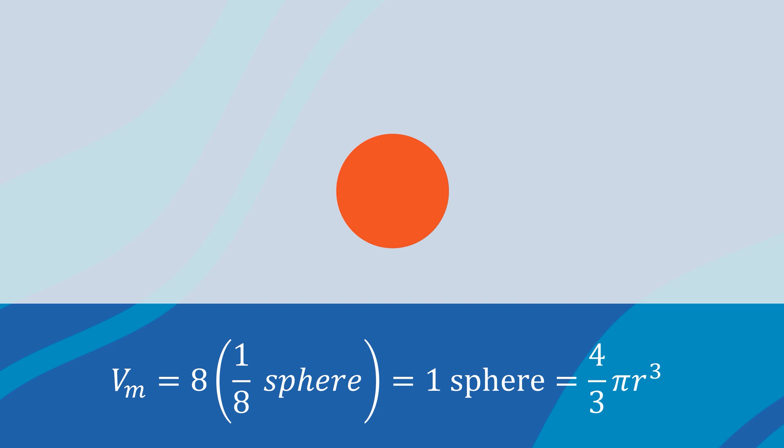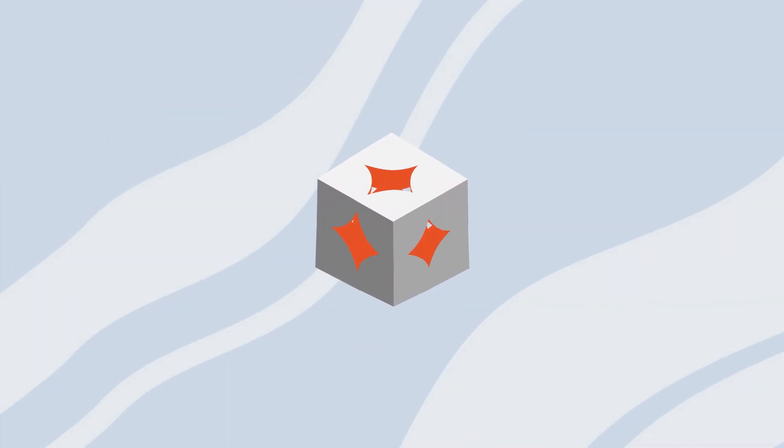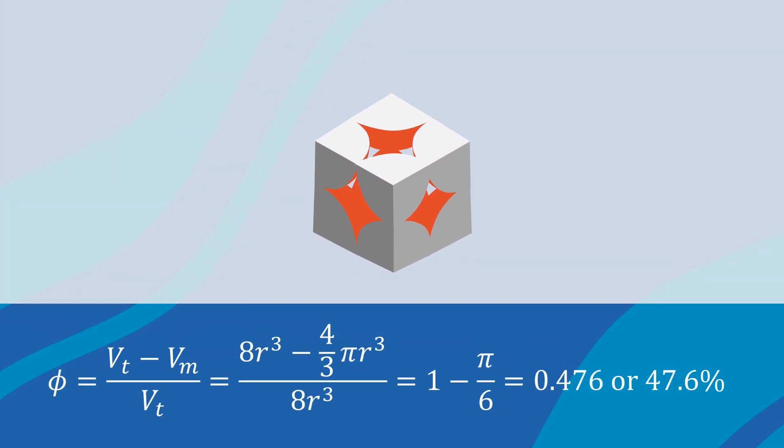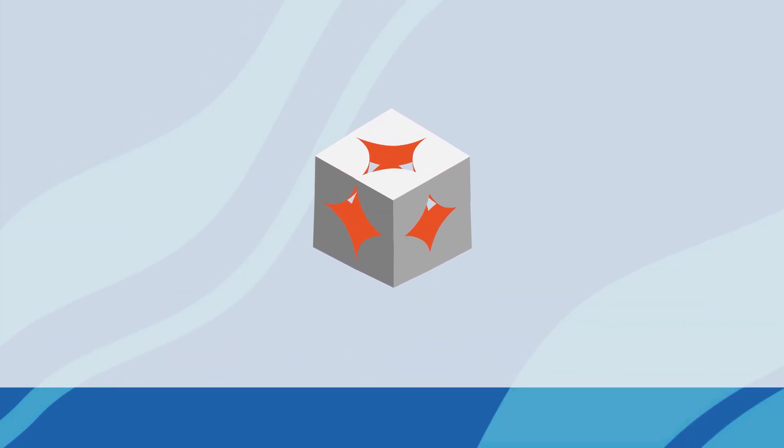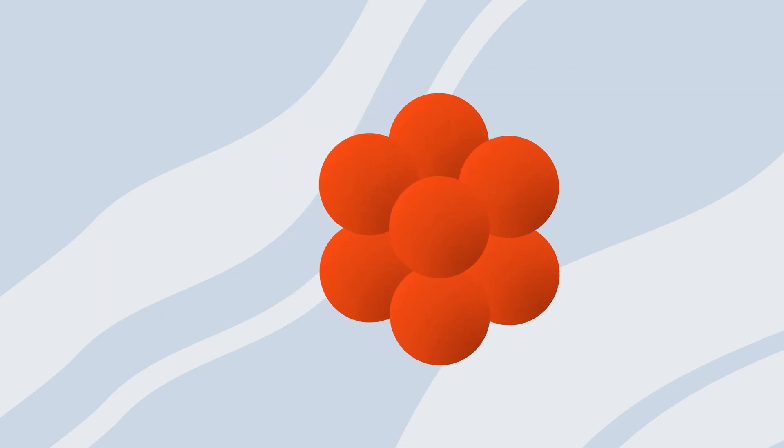The volume of 1 sphere is 4 over 3 pi r cubed. The porosity then becomes the bulk volume minus the matrix volume all divided by the bulk volume. And the answer for this case is 0.476 or 47.6%.